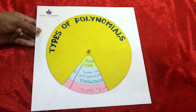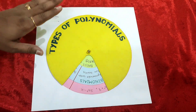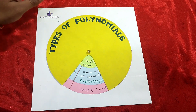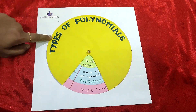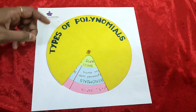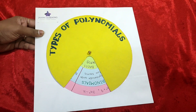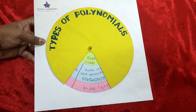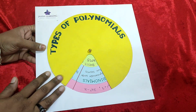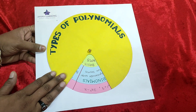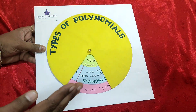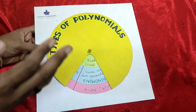Welcome to Jnana Learning. Today I am presenting a working model to explain types of polynomials. This is an interesting working model. We can classify polynomials based on two parameters.